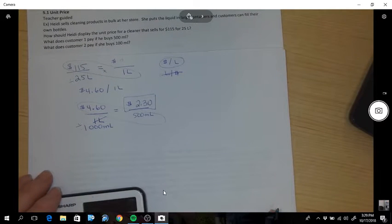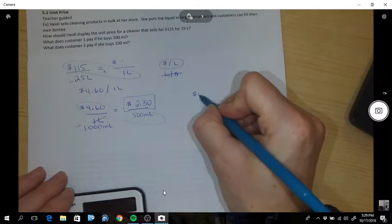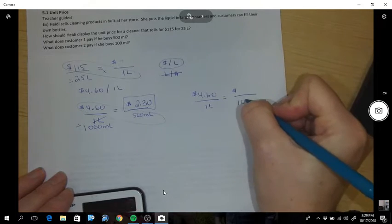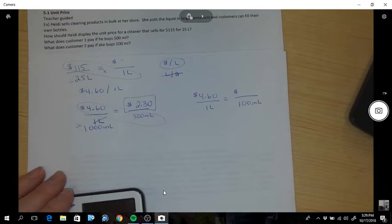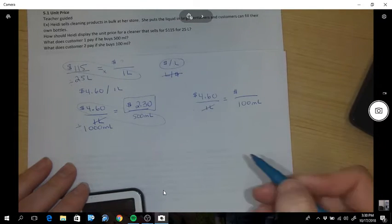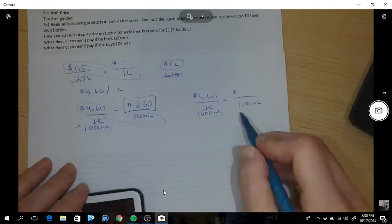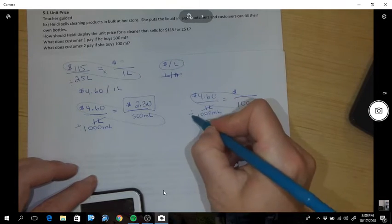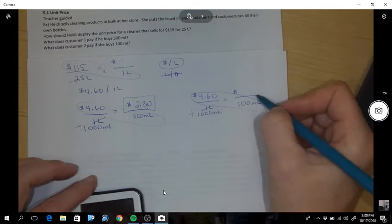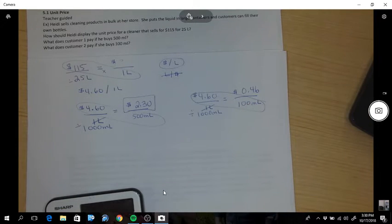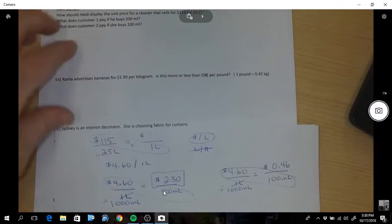Okay, customer two. Same idea: $4.60 per one liter equals how much they're going to spend for 100 milliliters. So my pants are not the same. I'm going to replace that 1 liter with 1,000 milliliters. So now I have milliliters both on the bottom. Times divide and you get 0.46 or 46 cents per 100 milliliters.